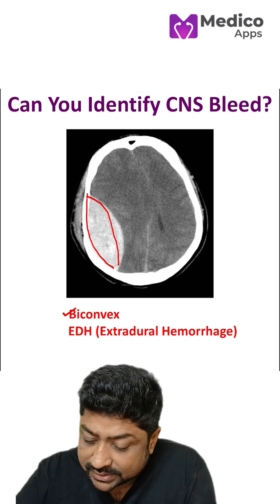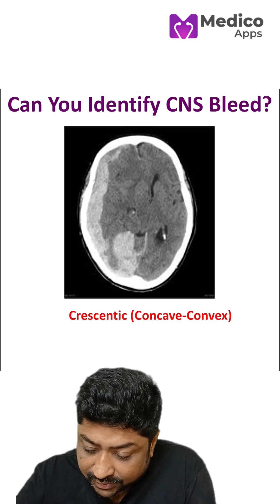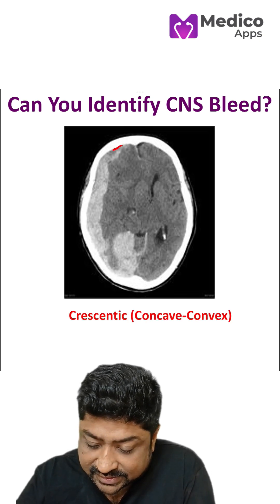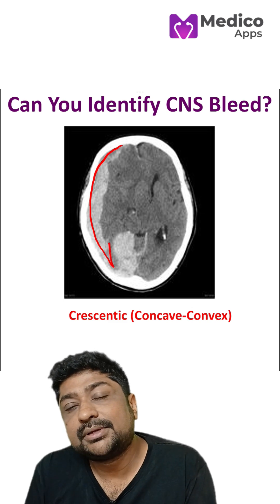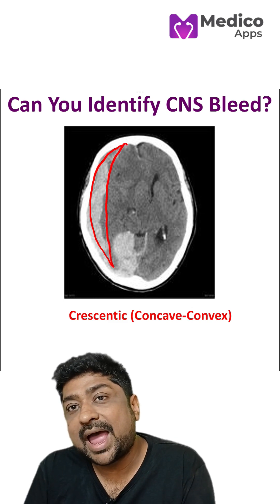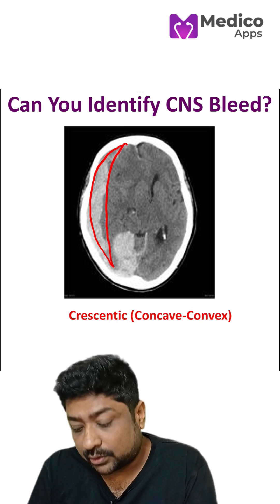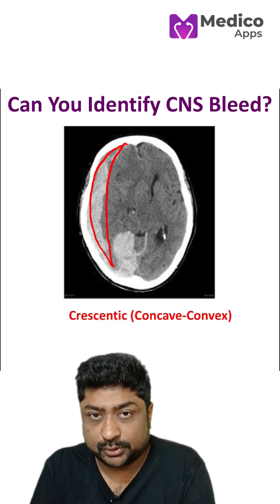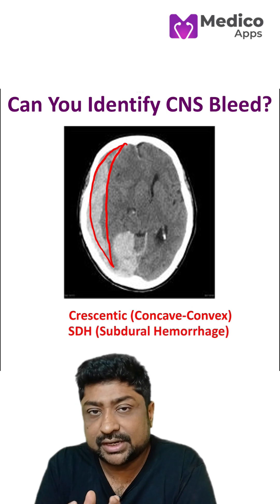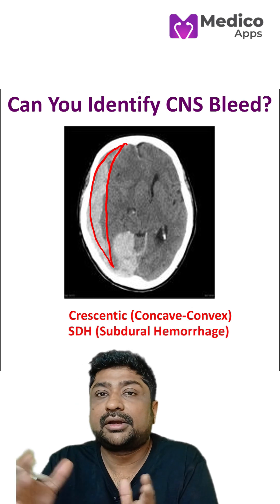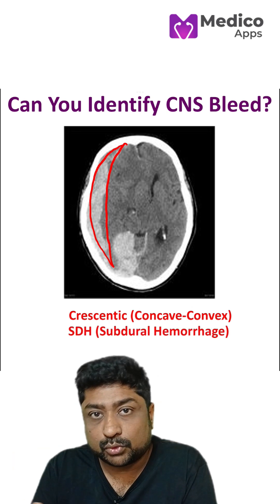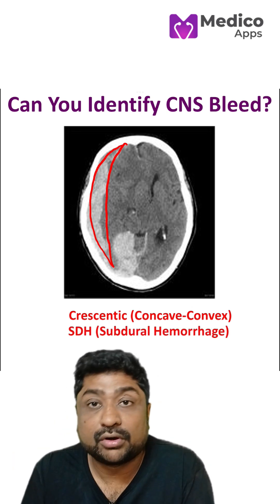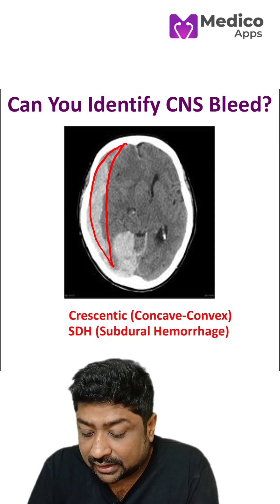Let's look at another case. Here we can see it's a crescentic bleed. This bleed happens between the dura and the arachnoid, and it is called subdural hemorrhage. Because it is loosely adhered, the blood can spread a little more — that's why you have a crescentic or concavo-convex bleed.